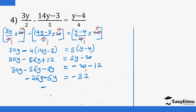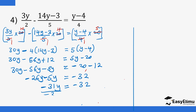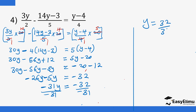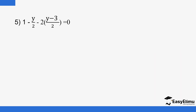So this is minus 31Y equals negative 32. Dividing both sides by negative 31, Y equals 32 over 31. Converting: 31 goes into 32 once with remainder 1, so Y equals 1 and 1 over 31.